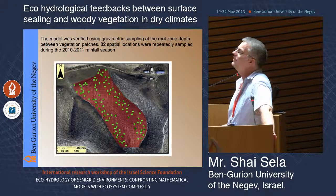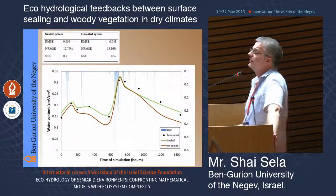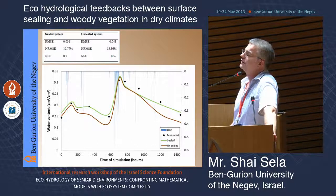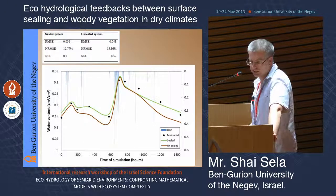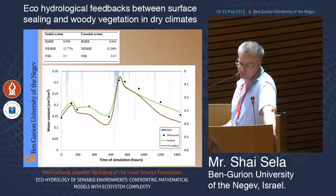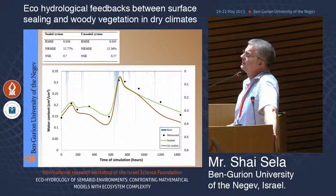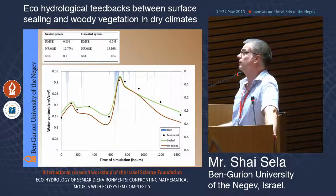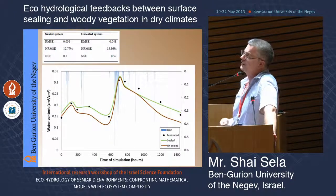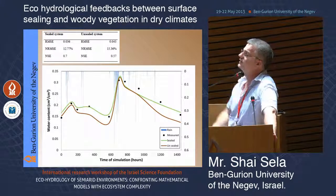After analyzing all these samples, we could validate our model. As Shmuel already showed, when you do not account for sealing, you have overestimation of evaporation fluxes. You can see the brown curve — representing the hill slope without sealing — dries up too fast and doesn't match the measured data shown as black circles.